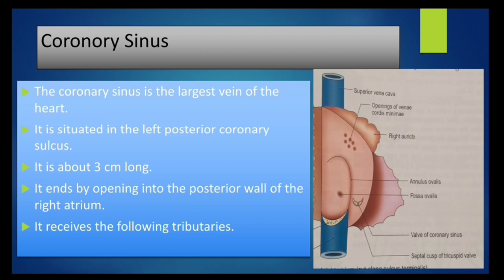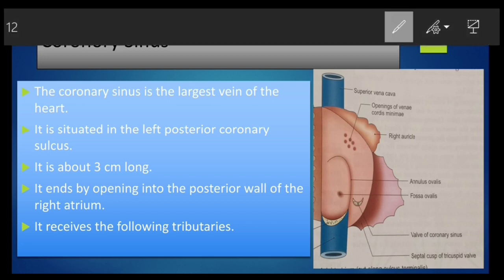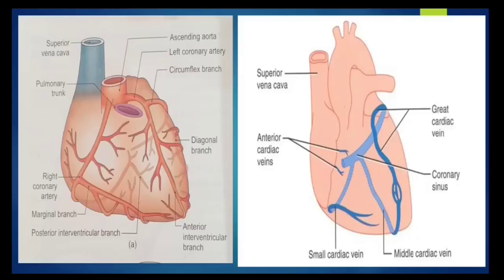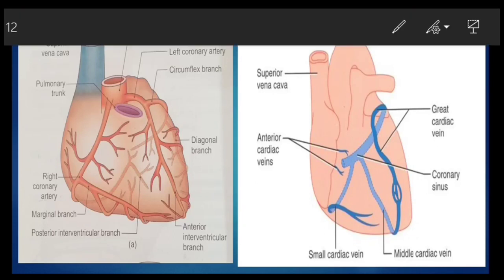Coronary sinus. The coronary sinus is the largest vein of the heart. It is situated in the left posterior coronary sulcus. It is about 3 cm long and ends by opening into the posterior wall of the right atrium. In the diagram, this is the coronary sinus, which is 3 cm long, situated in the left posterior coronary sulcus, and it directly opens into the posterior wall of the right atrium. It receives the following tributaries.